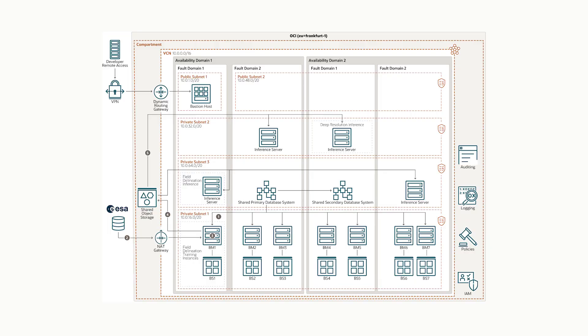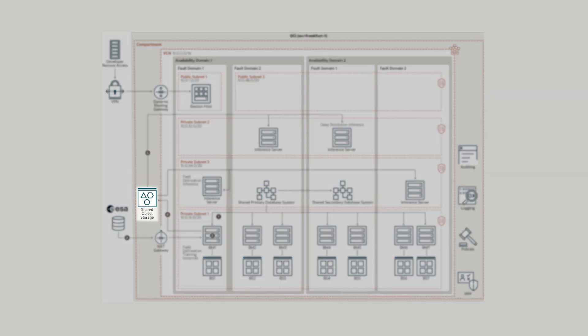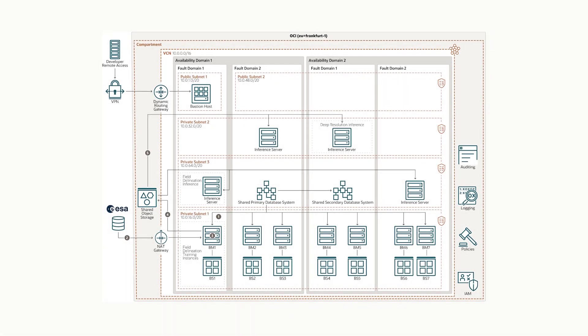These enhanced images are further manually delineated for a small region and we generate training datasets from that. Then we have our deep learning training instances which take these training datasets and build a model very specific to the regions we're interested in. In the next step, we take this model and the enhanced imagery to generate very highly accurate field boundaries or polygons. The output — the field boundaries and the enhanced images — are both stored in a Postgres database and in Oracle Object Storage. We then serve this to our clients using a serverless setup with OCI Functions and OCI API Gateways.